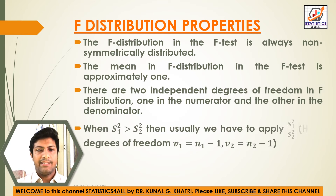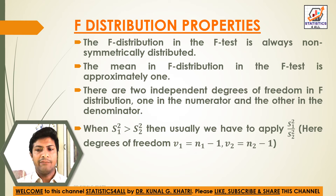When S1 square is greater than S2 square, then usually we apply S1 square divided by S2 square. Here degrees of freedom V1 is equal to N1 minus 1 and V2 is equal to N2 minus 1.